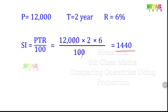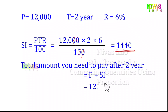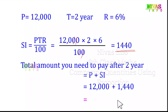The total amount you need to pay after 2 years is equal to principal amount plus simple interest. Principal amount is 12,000, simple interest is 1,440, so the total is 13,440. The total amount payable with simple interest is 13,440.